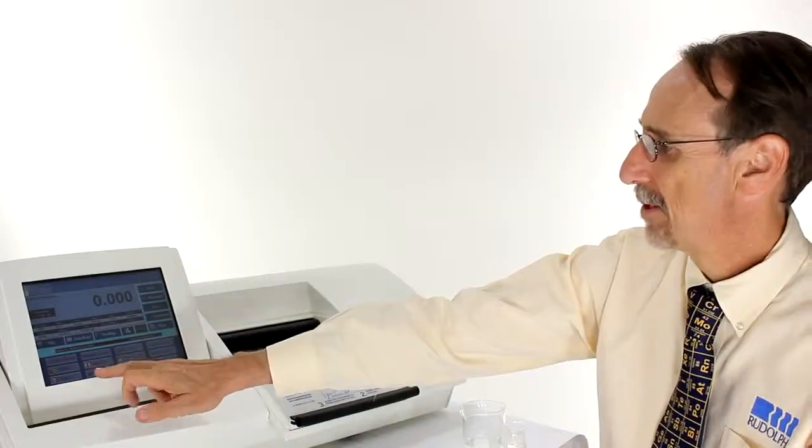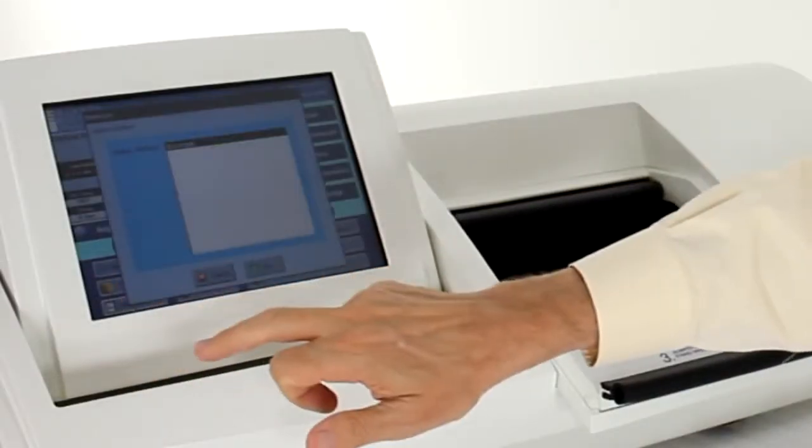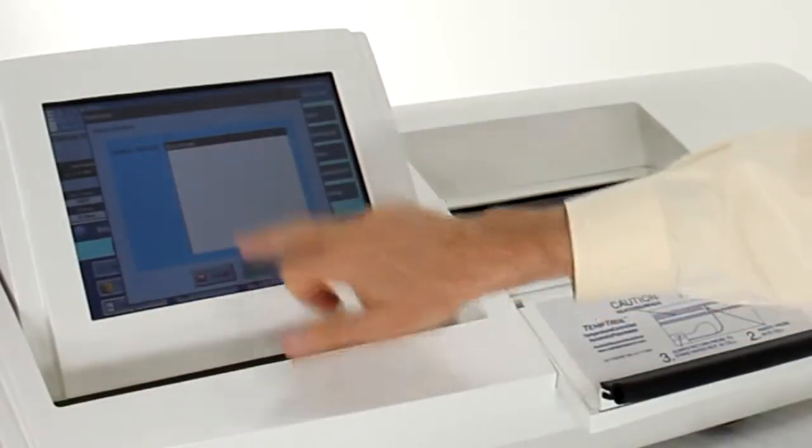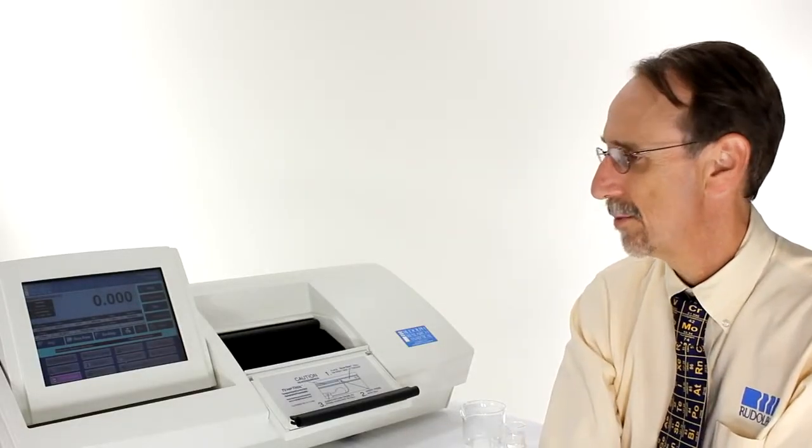With the Polarimeter, the first step is select the method. Press methods, select the method, press set. In this case I'm measuring sucrose so I've selected the sucrose method.